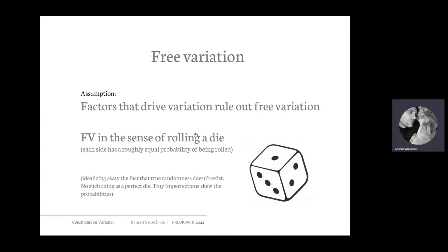By free variation, I mean something like rolling a die, where you can think of a perfect die where each side has a roughly equal probability of being rolled, and there is no way to predict which side will be rolled. I'm idealizing away the fact that true randomness does not even exist, because there is no such thing as a perfect die — each die has tiny imperfections that skew the probabilities.